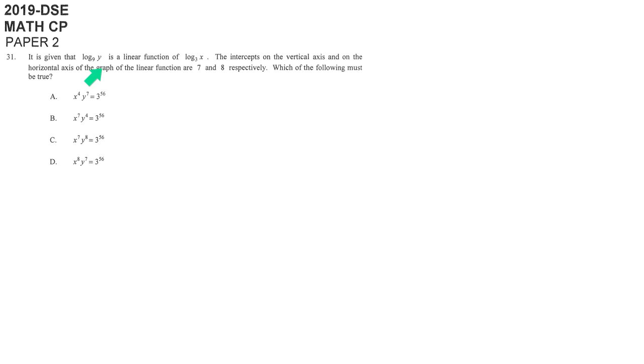Question 31 is about logarithms again. They say log 9y is a linear function of log 3x. What does linear function mean? That means if you choose the x-axis as log 3x and the vertical axis as log 9y, then it will form a straight line.